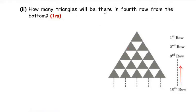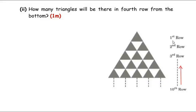The next question asks: how many triangles will there be in the 4th row from the bottom? We have to count starting from the bottommost row, which we established is the 10th row. So the sequence now changes because we count the number of triangles from bottom to top: 10th row, 9th row, 8th row and so on.